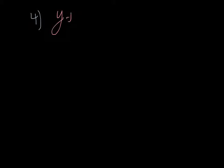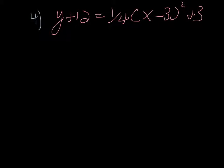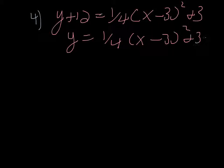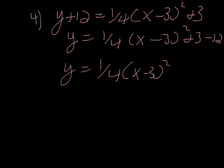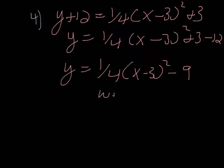Example 4 puts everything together: y plus 12 equals (1/4)(x−3)² plus 3. First, move 12 to the right side by subtracting: y equals (1/4)(x−3)² plus 3 minus 12, which simplifies to y equals (1/4)(x−3)² minus 9. Now identify: the 1/4 coefficient means a wide parabola, the minus 3 inside the parentheses means 3 units to the right, and the minus 9 means 9 units down.